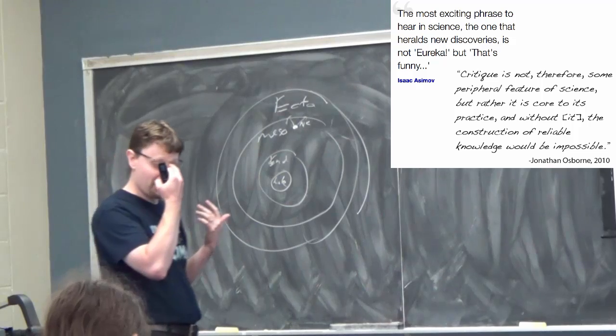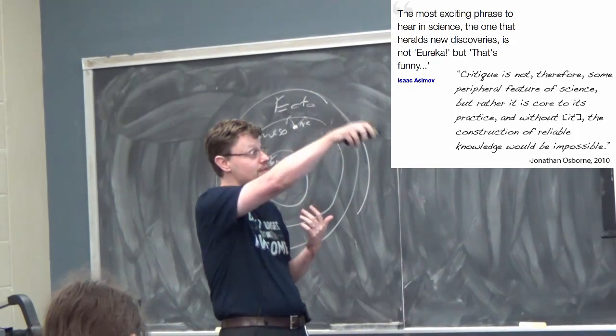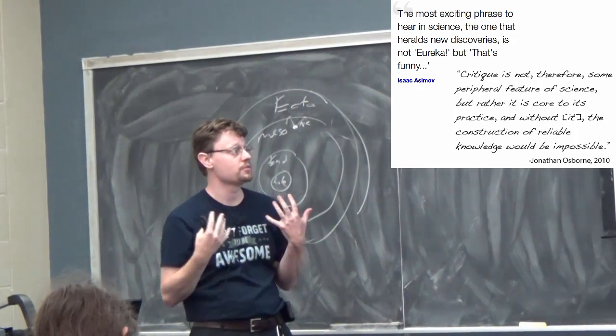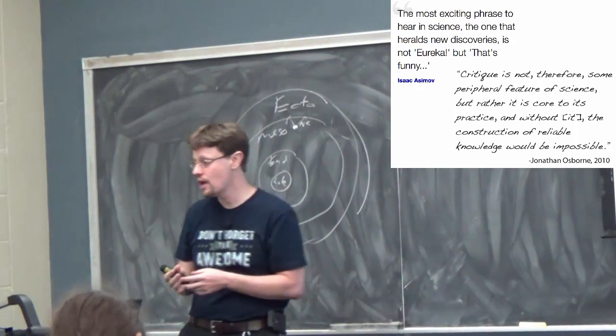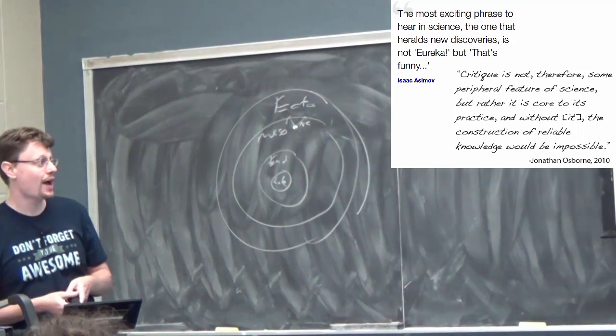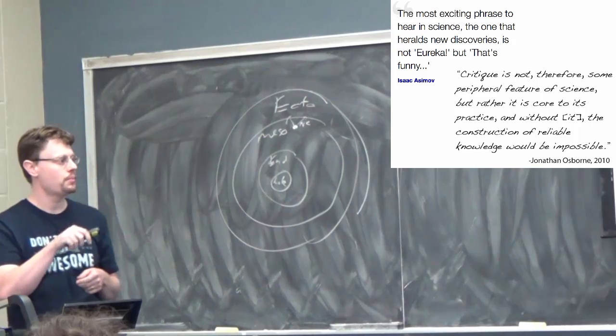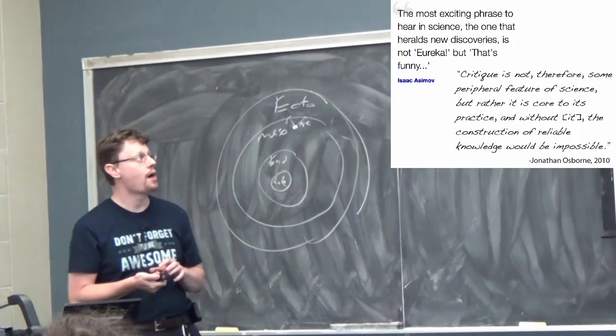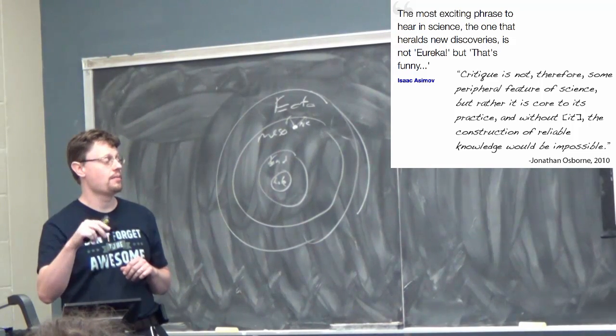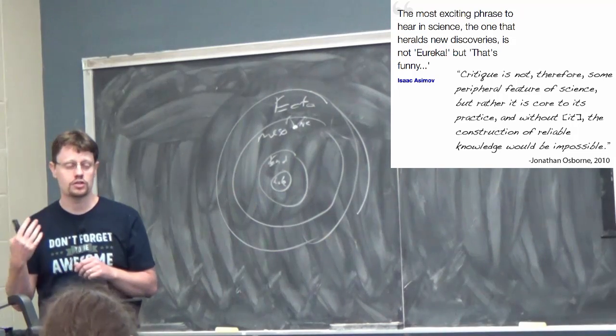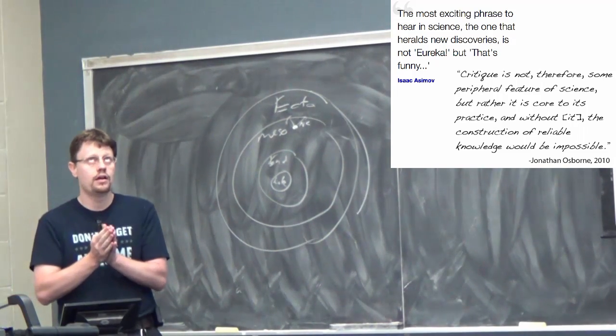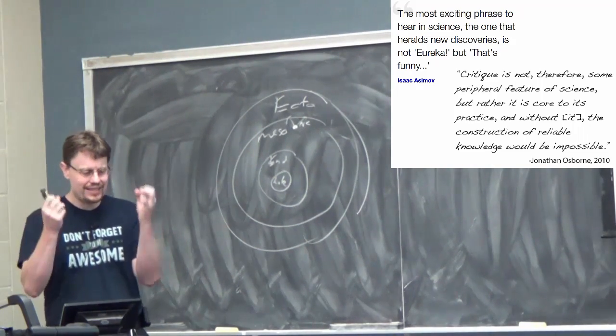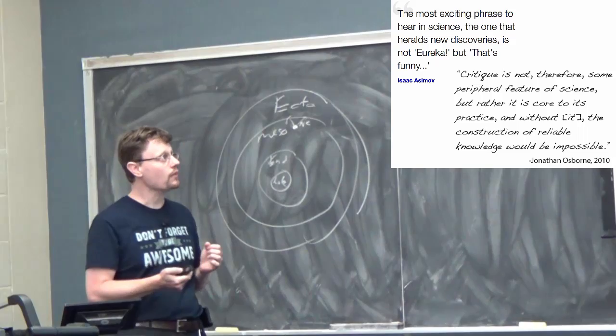And this reminds me of a couple of quotes. One that was in the syllabus. That critique and critical analysis is not some sort of peripheral feature of science, but rather is core to its practice, and without it, the construction of reliable knowledge would be impossible. This was from an article published in Science Magazine in 2010. And the idea that by critically analyzing our research and thinking about not only the models and theories that we have, but thinking about the data behind it.